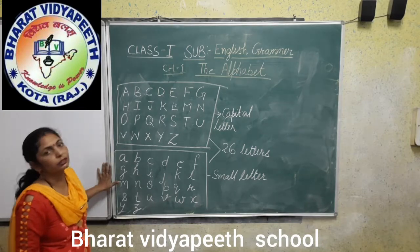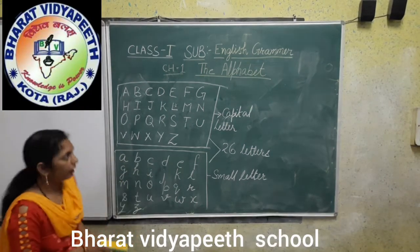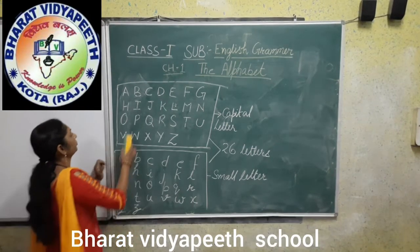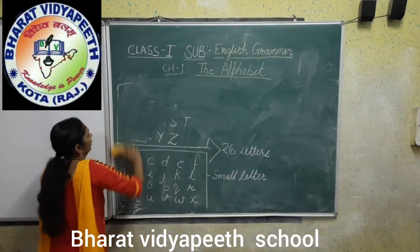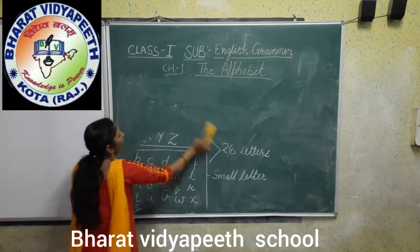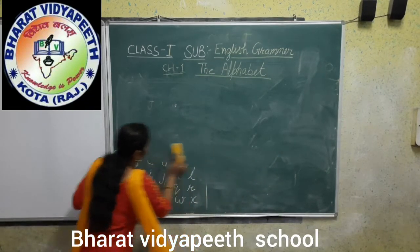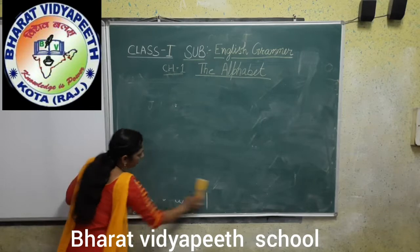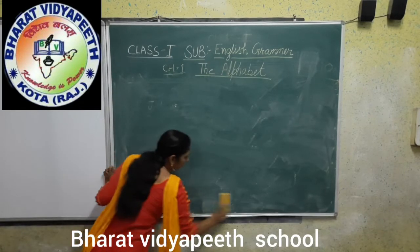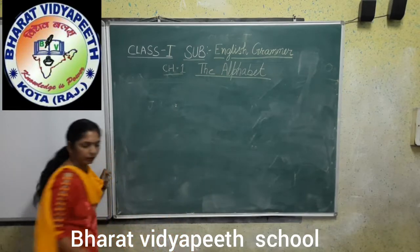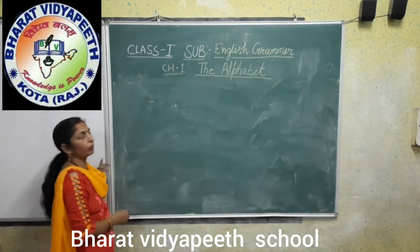This order is called alphabetic order. Now, when we write any word, the first letter should be written in a capital form, not a small form.